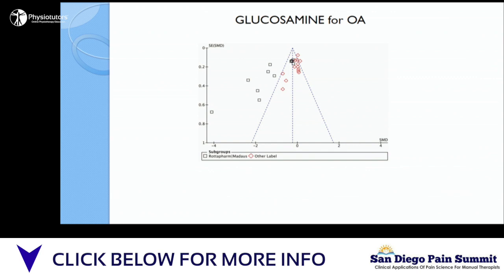What's even more interesting is the red squares are all trials from one manufacturer, which is Rotter Farm. And the red diamonds are everyone else. Because they're all testing the same compound — look at that! This is the most extreme funnel plot I've ever seen. It shows you that small trials of Rotter Farm that show it's really effective are over here, getting published. But there's a big gap over here, and it's specific to one manufacturer.